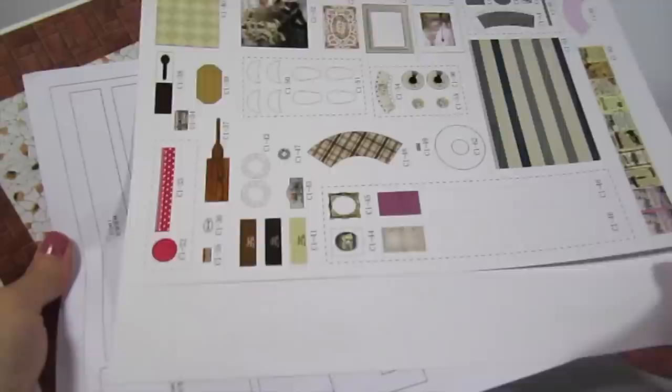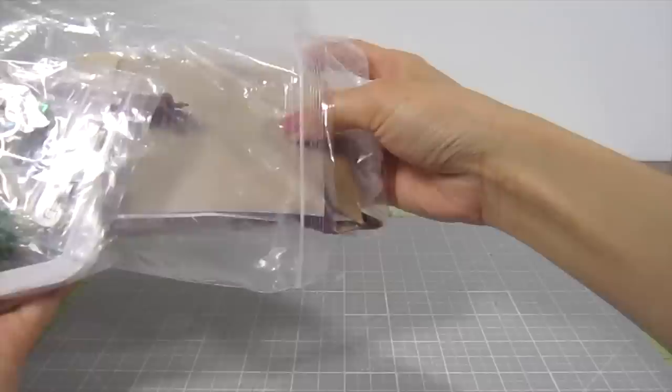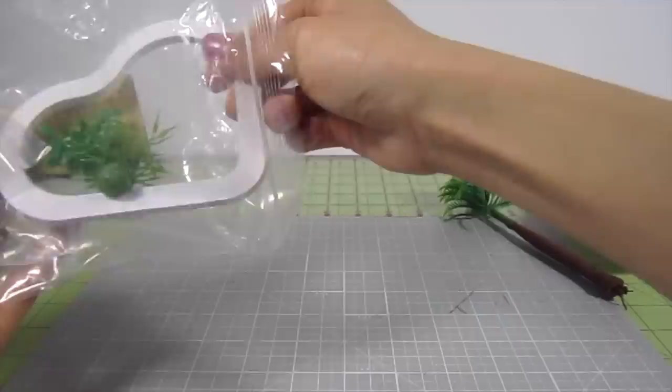The first Ziploc bag contains even more bags inside of it and they hold little wooden pieces that form the furniture, windows, doors, and fencing. The second Ziploc bag contains fabric, paper, greenery for the garden, pieces for the pool and lawn, a lighting kit, wires, and beads.